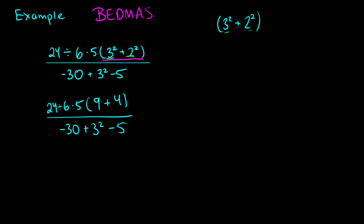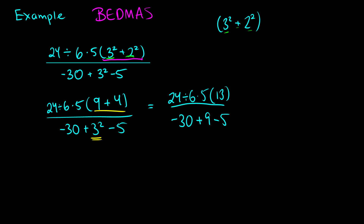We still need to finish inside the brackets: 9 plus 4 is 13. So the numerator becomes 24 divided by 6 times 5 times 13. On the denominator, there are no brackets so we take care of the exponent right away: 3 squared is 9. So the denominator is negative 30 plus 9 minus 5.